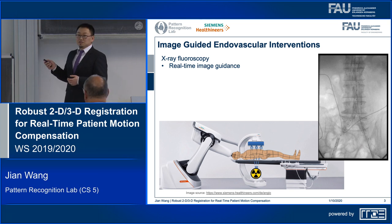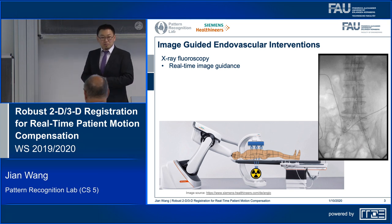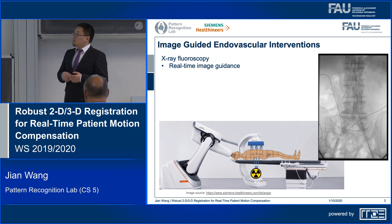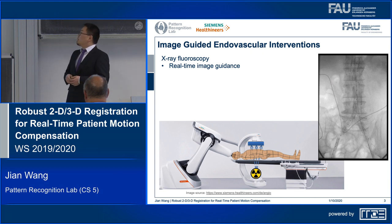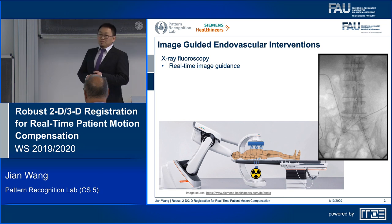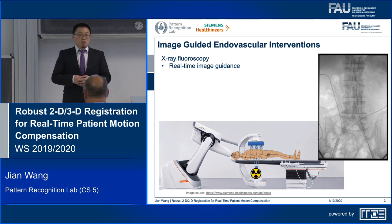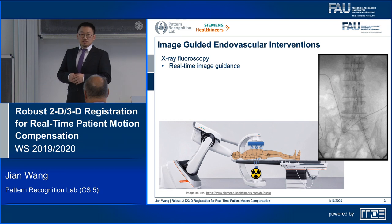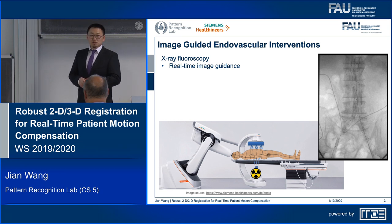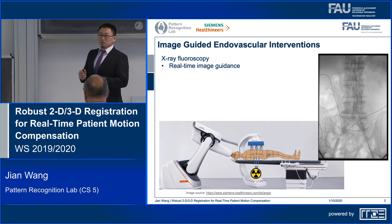Firstly, the vascular structures have very bad contrast in the X-ray images, and they are only visible when contrast material is injected. Secondly, there's no depth information in such X-ray images, and sometimes that can be quite critical for complex use cases. To accommodate such limitations, we can use 2D-3D image fusion to augment the X-ray fluoroscopy with an overlay over the 3D volume.